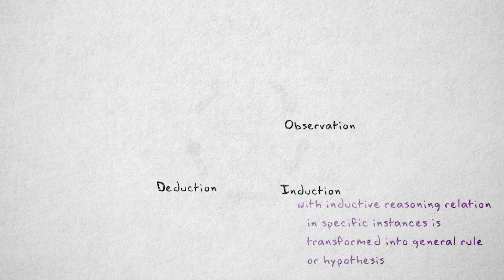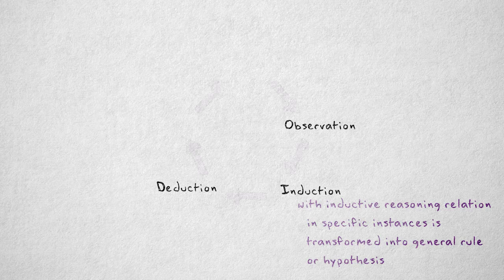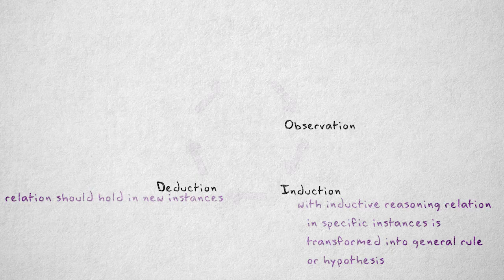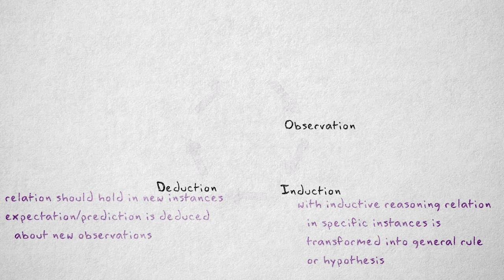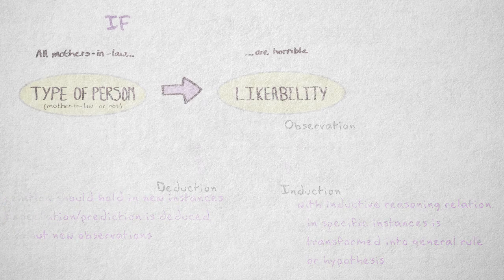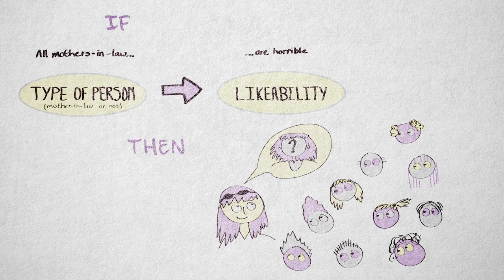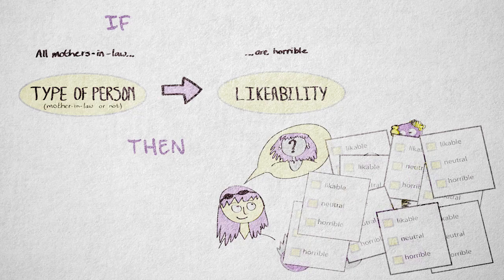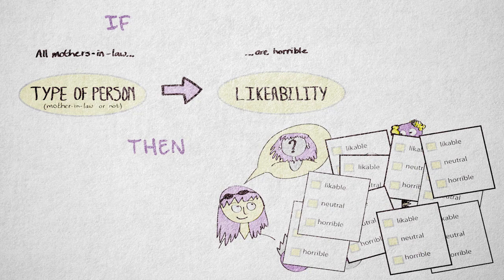In the deduction phase, we deduce that the relation specified in the general rule should also hold in new, specific instances. From our hypothesis, we deduce an explicit expectation or prediction about new observations. For example, if all mothers-in-law are indeed horrible, then if I ask 10 of my colleagues to rate their mother-in-law as either likable, neutral, or horrible, then they should all choose the category horrible.